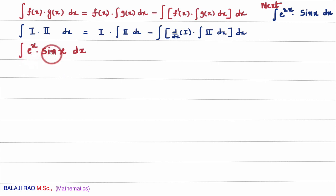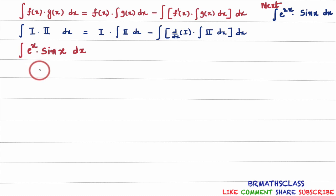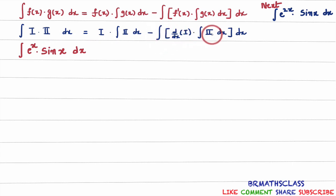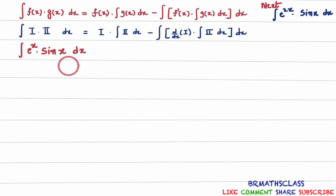You can observe here that the integral of a product of two functions is given. Whenever we integrate a product of two functions, we will use the integration by parts formula. The integration by parts formula states: integral of the product of two functions equals the first function into the integral of the second function, minus the integral of the derivative of the first function into the integral of the second function. Before applying the formula, we will check the ILATE rule to identify which function is the first function and which is the second function.